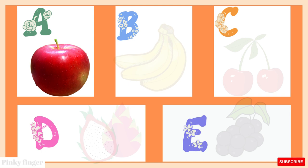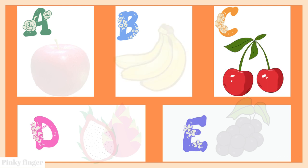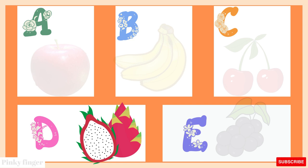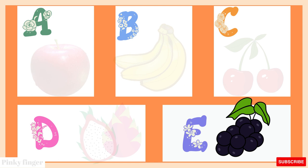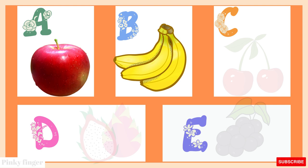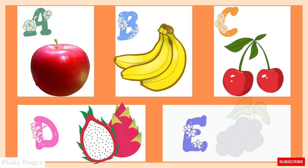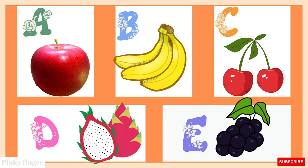A is for Apple. Apple. B is for Banana. Banana. C is for Cherry. Cherry. D is for Dragon Fruit. Dragon Fruit. E is for Elderberry. Elderberry. A is for Apple. B is for Banana. C is for Cherry. D is for Dragon Fruit. E is for Elderberry.